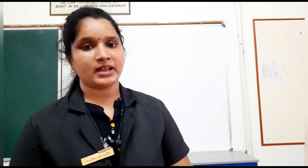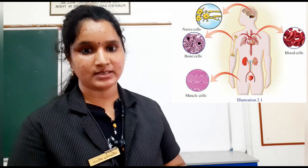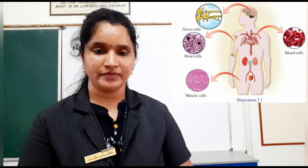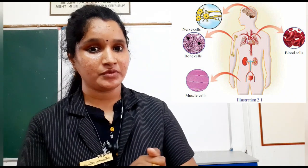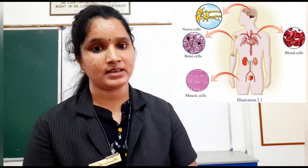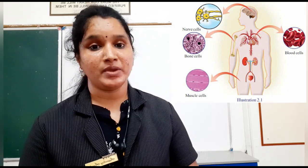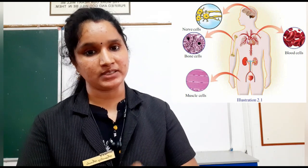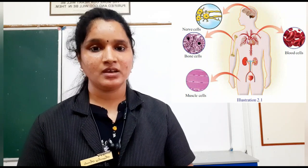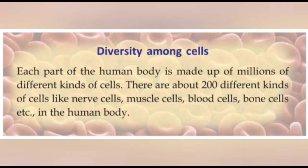So, look at this picture again. In this human body, it is made up of many different kinds of cells, which are about 200 kinds of cells. And millions of these different kinds of cells are there in our body. Now, read this description. Each part of the human body is made up of millions of different kinds of cells. There are about 200 different kinds of cells, like nerve cells, muscular cells, blood cells, bone cells, etc., in the human body.